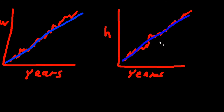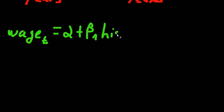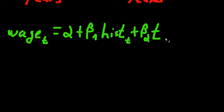How can we account for that? That's fairly simple — let's rerun the regression, but this time we add a deterministic trend into the equation. So the equation becomes: wage at time t is equal to alpha plus beta_1 times hist (the number of economic historians) at time t, plus beta_2 times trend at time t, plus an error term epsilon t. Trend is simply the number of periods — just the years — representing a linear trend.